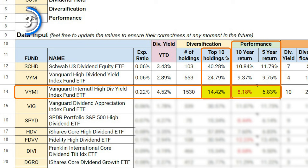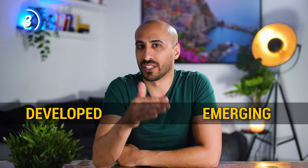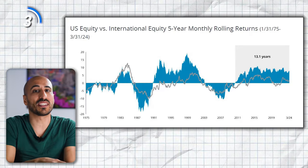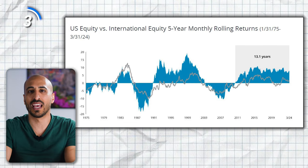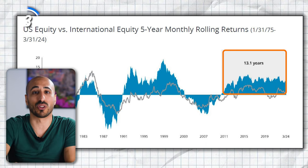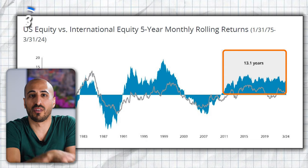VYMI is an international ETF including developed and emerging markets, which brought lower returns in the last 10 years. But I want to remind everyone that the US didn't always outperform international stocks. Since 1975, US and international have tended to outperform each other in cycles of around 8 years. We're currently 13 years into the current cycle of US outperforming international, based on 5-year monthly rolling returns, so international might outperform again in the future.